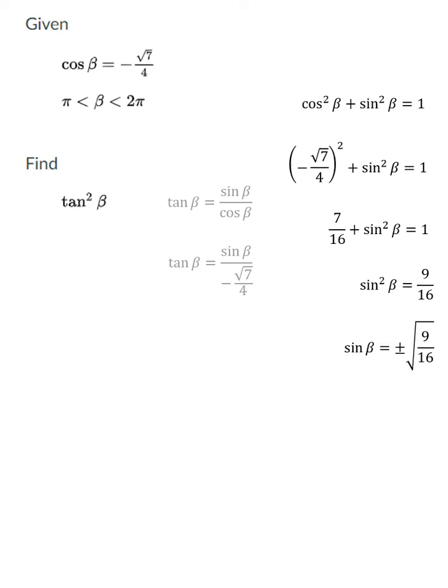Now applying the radical property gives me plus or minus 3 4ths for the sine of beta. In general, it could be either, but not in this case.